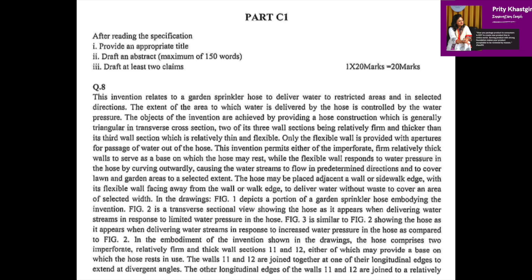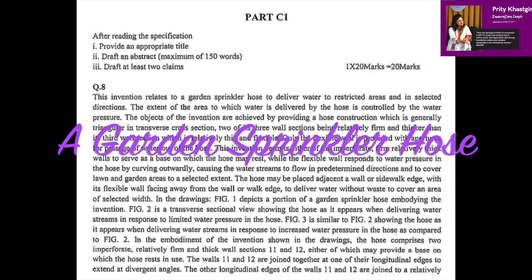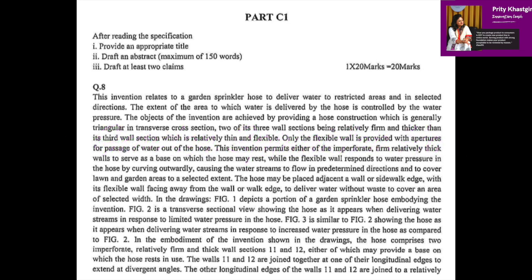Now coming to the answer: provide an appropriate title. The appropriate title for question number eight can be 'A Garden Sprinkler Hose.' Whether or not the functional aspect should be there in the preamble, that we can figure out once we write the claims for this case.